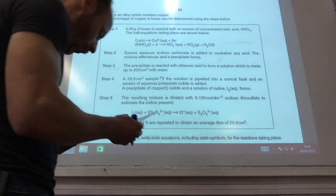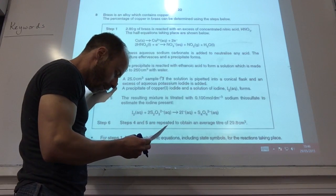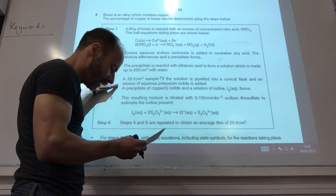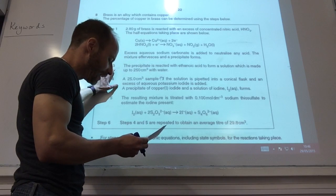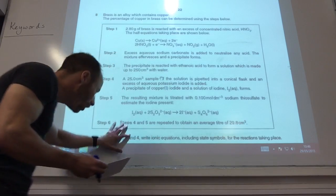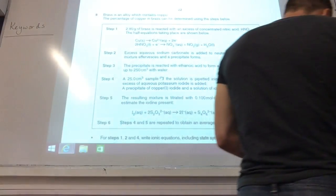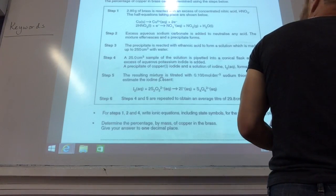I need to write equations for step one, two, and four, including state symbols, the ionic equations, and I need to determine the mass, the percentage mass of copper in advance. So, a lot of information there for you to read through. Let's try and work our way through this.